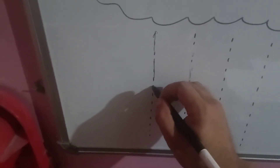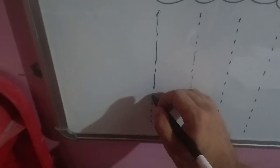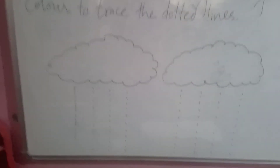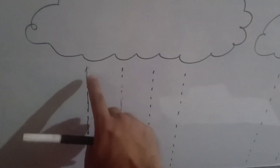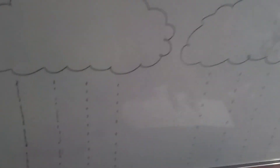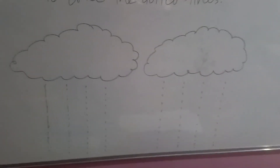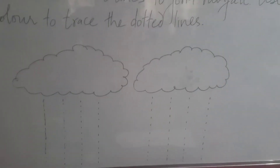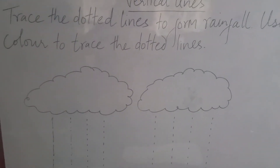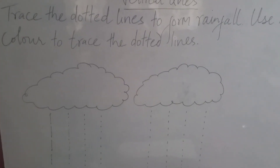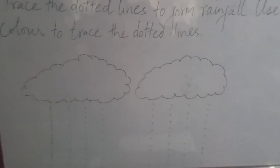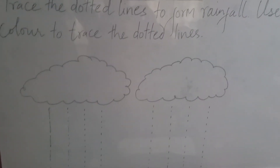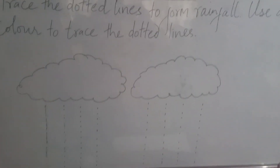You can see I have used blue color to trace the dotted lines, which makes the rainfall and looks like vertical lines. We will do more exercises in the next coming class. That's all for now, thank you.